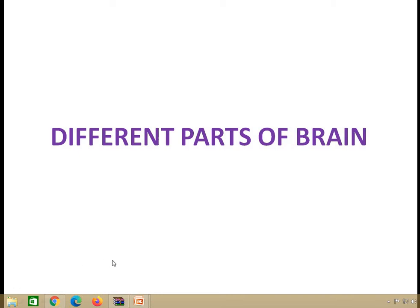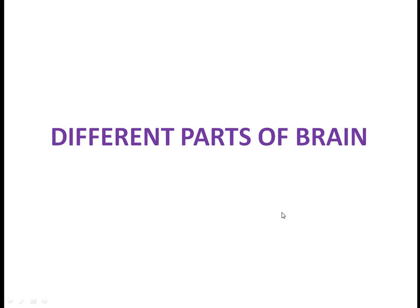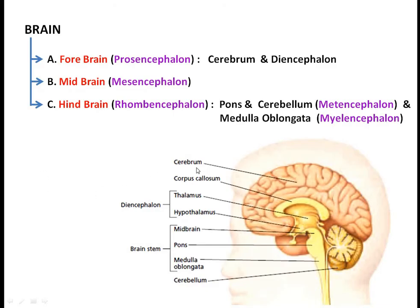Today we will discuss different parts of the brain. As discussed earlier, the brain and spinal cord are part of the central nervous system. The brain consists of the forebrain, midbrain, and hindbrain, also known as prosencephalon, mesencephalon, and rhombencephalon respectively. The forebrain consists of the cerebrum and diencephalon. The major components of the diencephalon are the thalamus and hypothalamus; others include the epithalamus and metathalamus.